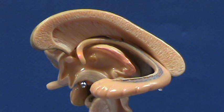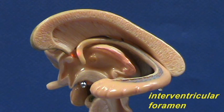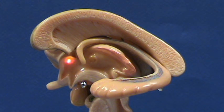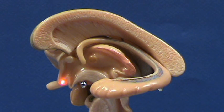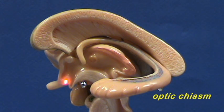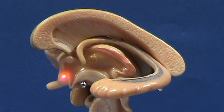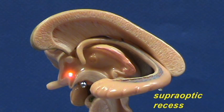Right over here, more medially, is the interventricular foramen. Right in front of it, you have the anterior commissure. Right over here is the optic chiasm, and right above it you have the supraoptic recess.